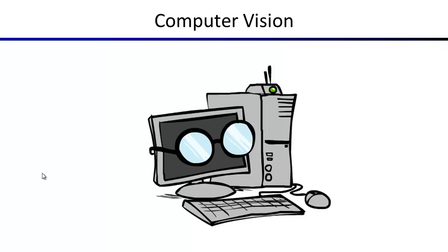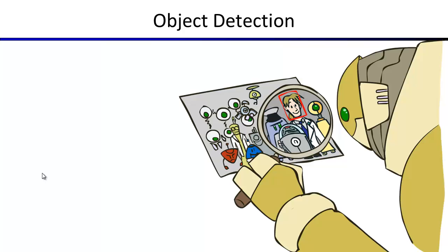So first, computer vision. The goal here is to make a computer understand what's in an image or video stream. One of the most common applications right now is object detection. The problem is that you're faced with an image and asked to detect certain things — faces, a particular person, a car, a pedestrian, and so forth.